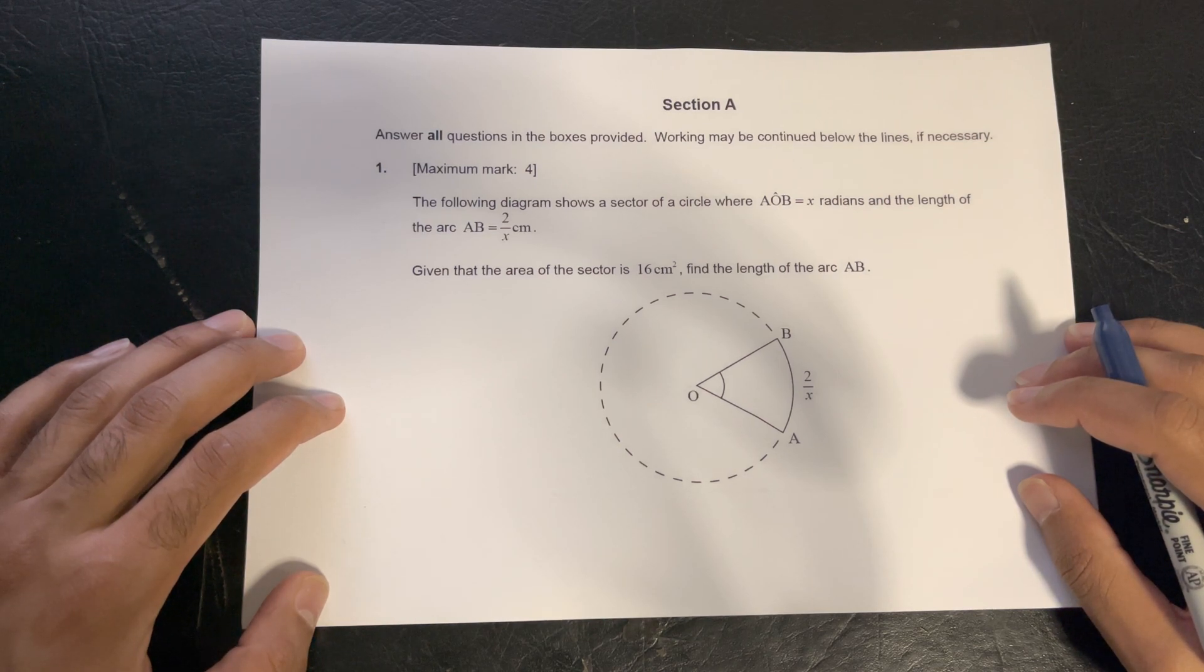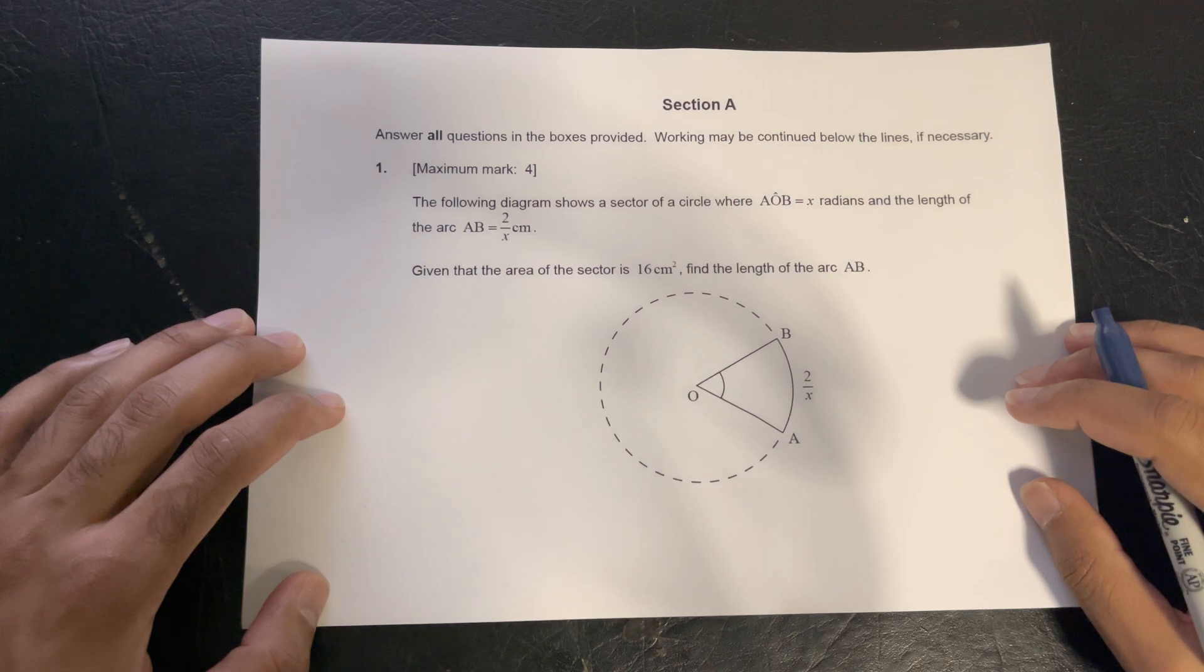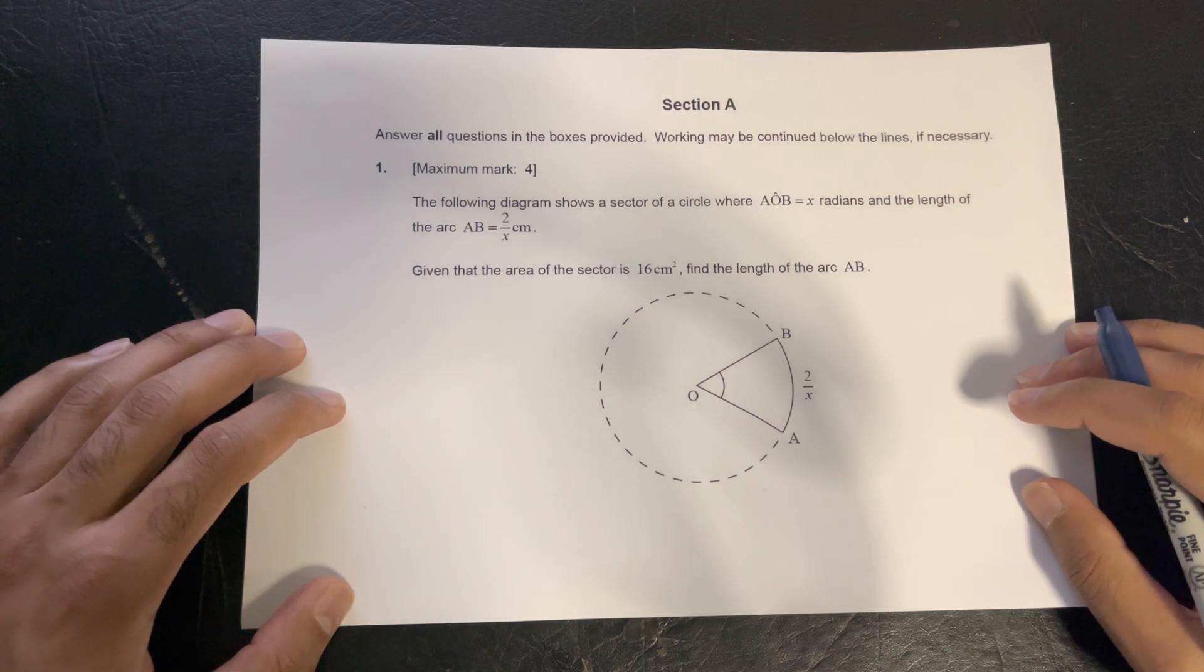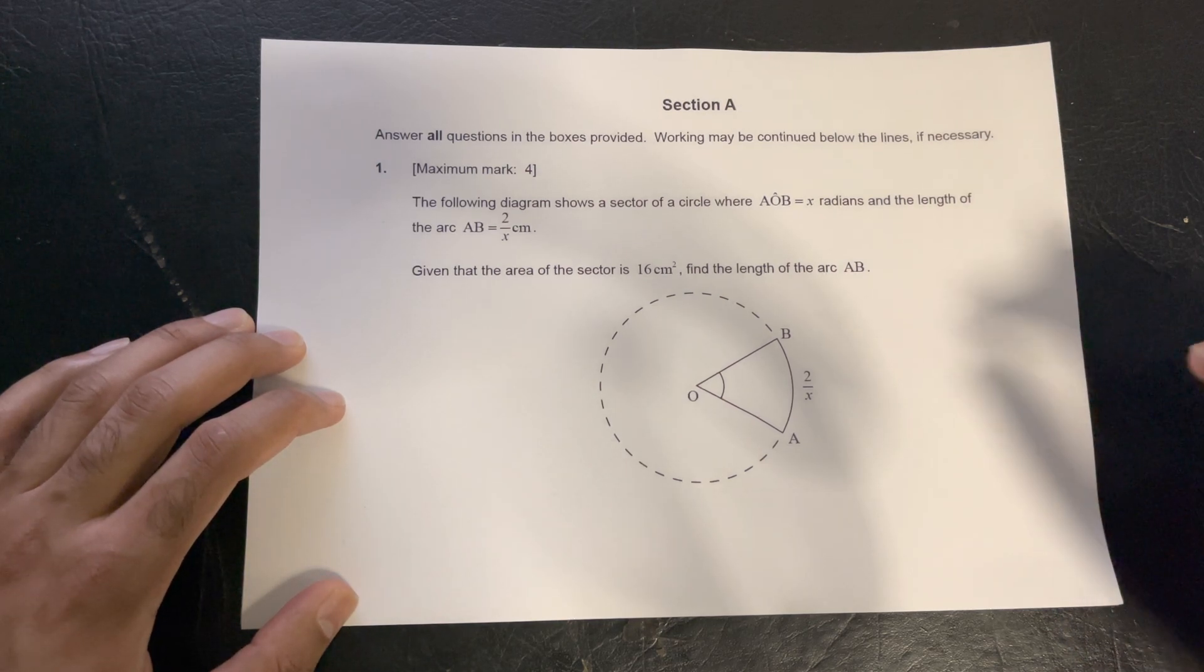The following diagram shows a sector of a circle where AOB equals x radians and the length of the arc AB equals 2 over x centimeters. Given that the area of the sector is 16 centimeters squared, find the length of the arc AB.